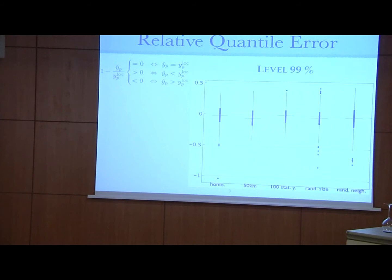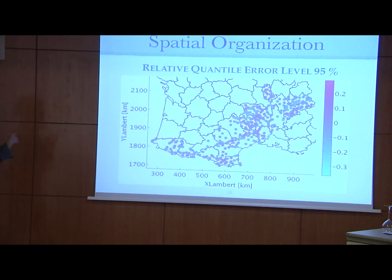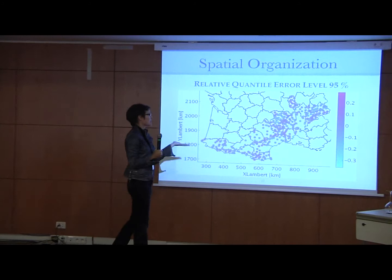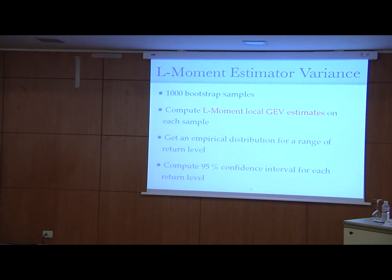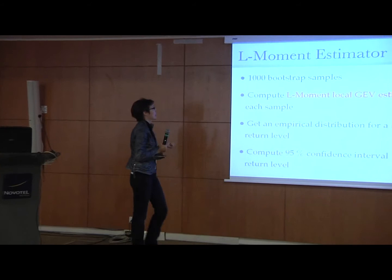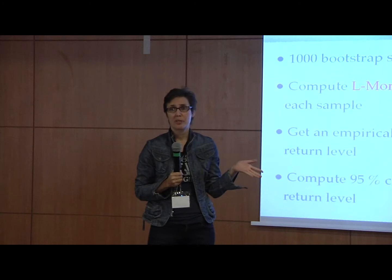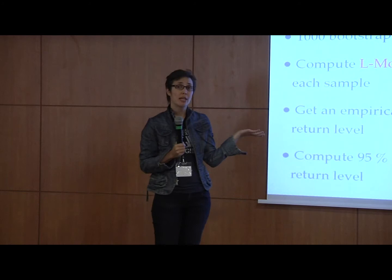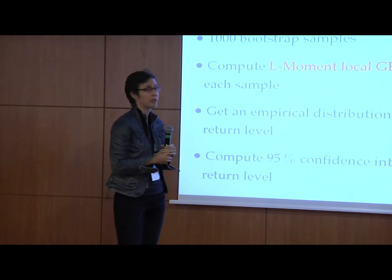We also looked at the spatial organization of the error. We did this for all quantile levels and all types of neighborhoods, and as far as we could see — though we did not perform any formal tests — there was no special spatial organization of the error, and nothing special occurring on the mountains. We then checked the variability of the choice of neighborhood against the variance of the L-moment estimator, using bootstrap resampling. We drew a thousand bootstrap replicates of the observation series at each validation site, computed the L-moment algorithm for each sample, and obtained an empirical distribution and 95% confidence interval for any quantile level.